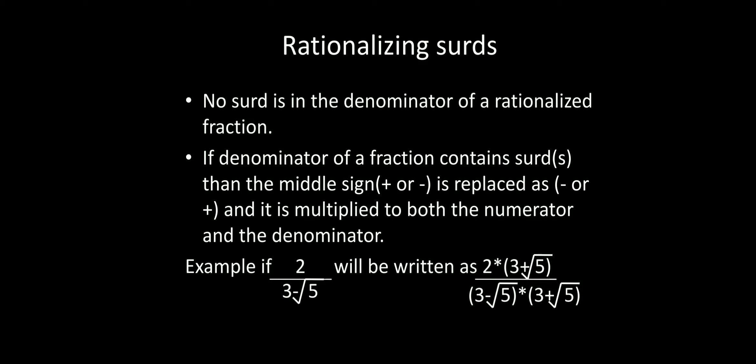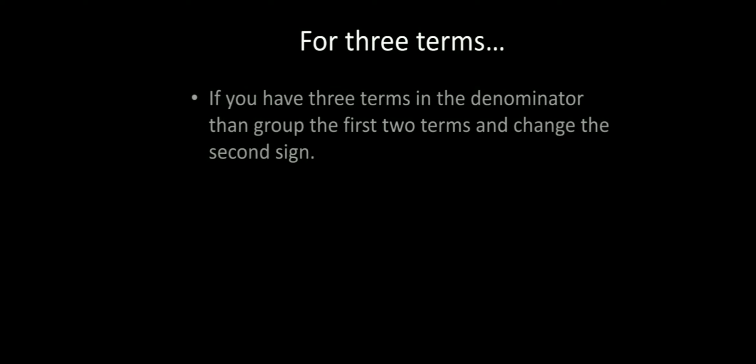For example, you have 2 over (3 minus root 5). The denominator is 3 minus root 5. Change the middle sign and multiply both numerator and denominator by (3 plus root 5), giving 2(3 plus root 5) over (3 minus root 5)(3 plus root 5). The denominator becomes a squared minus b squared, so (root 5) squared is 5, and the surd is removed from the denominator.